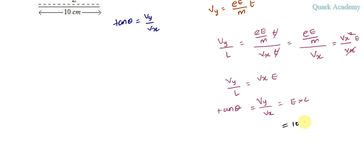E is 10 and L is 0.1, which gives 1. So tan theta equals 1, then theta equals tan inverse of 1. When tan theta equals 1, theta is 45 degrees.